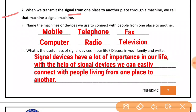Next question: when we transmit a signal from one place to another through a machine, jab hum ek machine ke dwara signal ko ek isthan se doosre isthan par bhejte hain, we call that machine a signal machine. To hum use ek signal machine kehte hain.